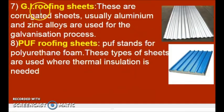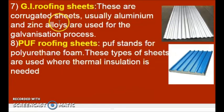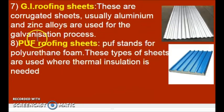Seventh one is GI Roofing Sheets. GI stands for Galvanized Iron. These are corrugated sheets where aluminum and zinc alloys are used for the galvanization process. The coating used over these iron sheets is of aluminum and zinc alloys.